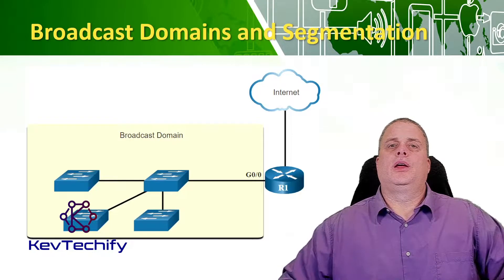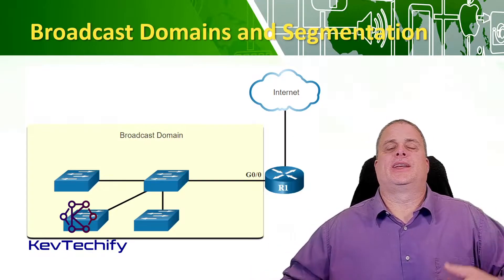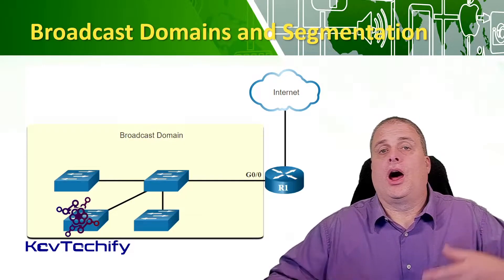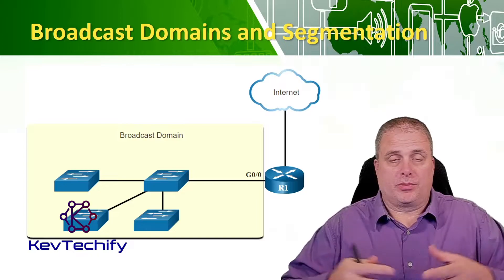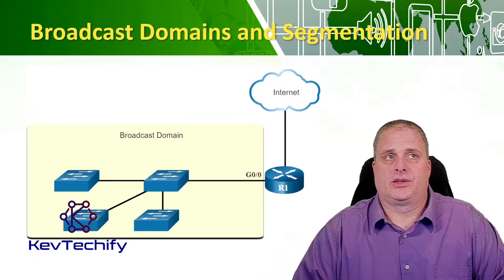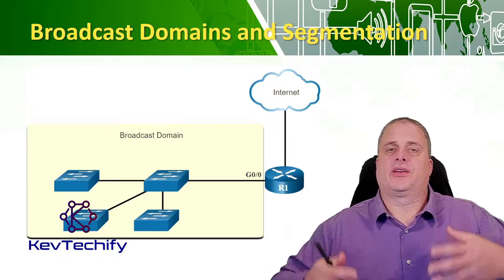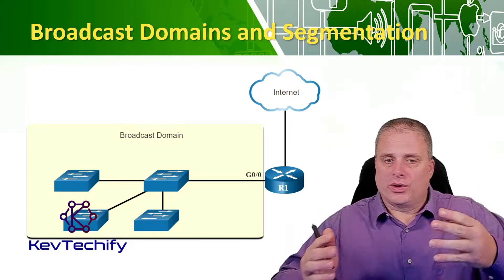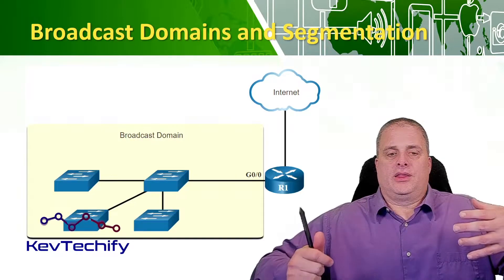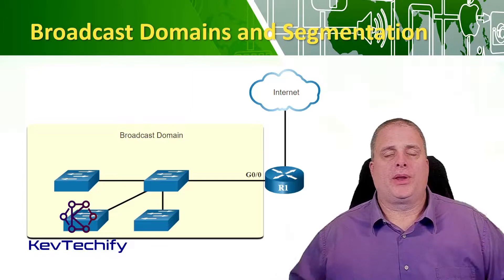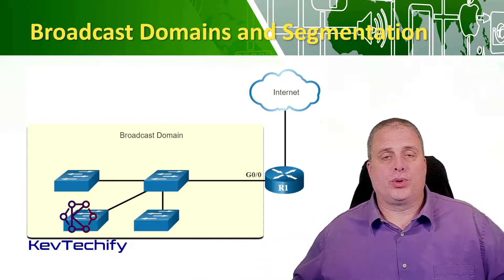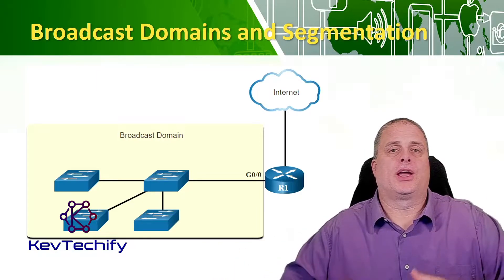On a network, there are several devices and several protocols that send out broadcasts and multicasts just to operate and get things done. ARP sends out broadcasts to find a MAC address so we can send data to a device. DHCP sends out discover requests so devices can find the DHCP server. We're sending out all these broadcasts on a network. Switches propagate broadcasts — if a switch receives a broadcast, it sends it out all other ports except the one it came in on.